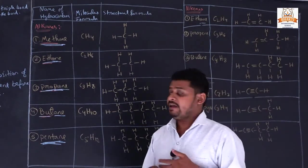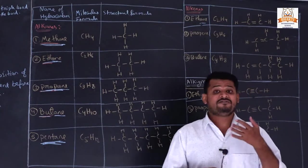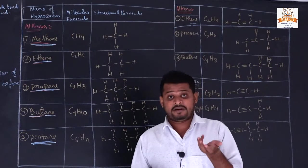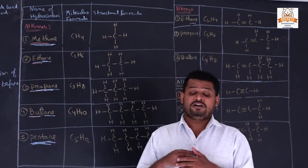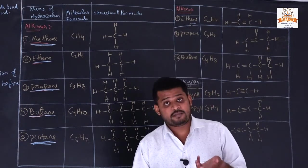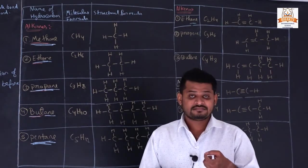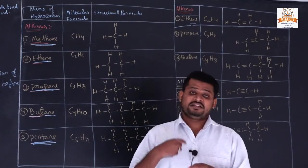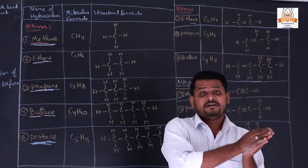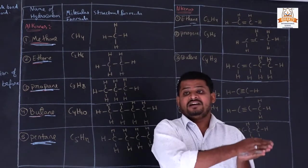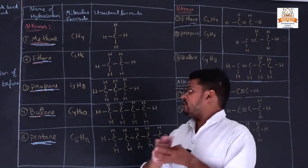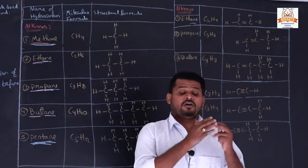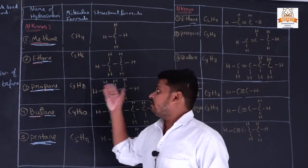Did you understand how we are naming these structural formulas based on their bonding? On the basis of bonds: single bond gives '-ane', double bond gives '-ene', triple bond gives '-yne'. For example, 2 carbons with single bond is ethane, 2 carbons with double bond is ethene. It totally depends on how the carbon atoms are bonding with each other.